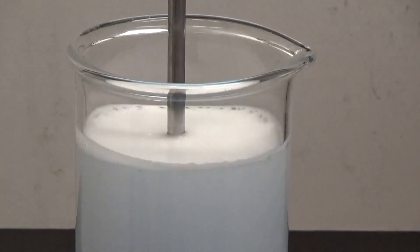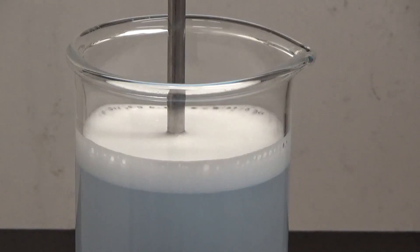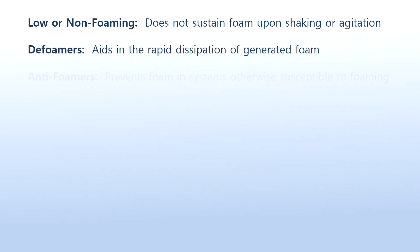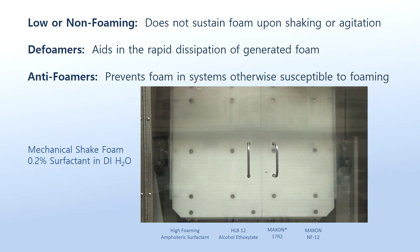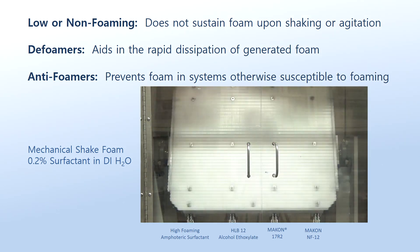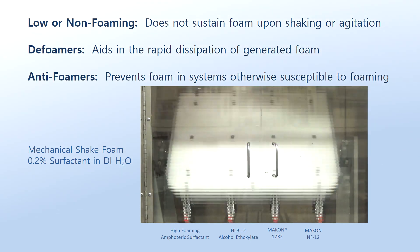Controlling foam in process and in application can be an important challenge for formulation chemists. Certain types of non-ionic surfactants are intrinsically low or non-foaming and can function as defoamers or even anti-foamers. Such surfactants can offer multifunctional benefits such as cleaning and wetting while also helping to control foam.